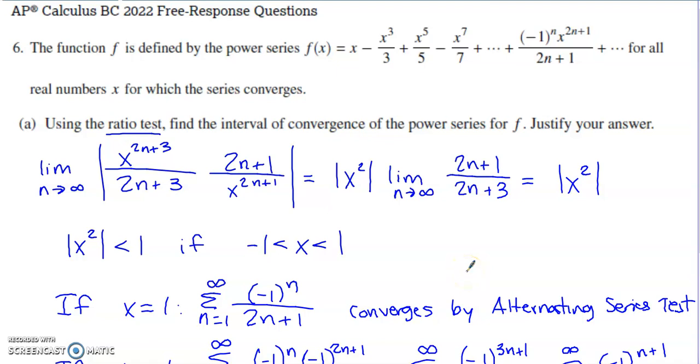So this is problem number six from the 2022 AP Calc BC exam, and as number six always is on the BC exam, this is a question that deals with some series. They tell us that the function f is defined by this power series, and that holds for all real numbers x for which the series converges.